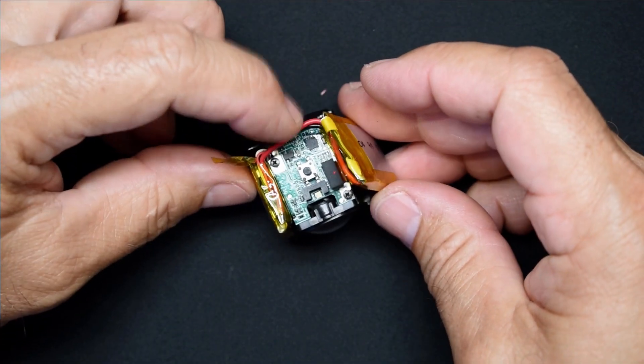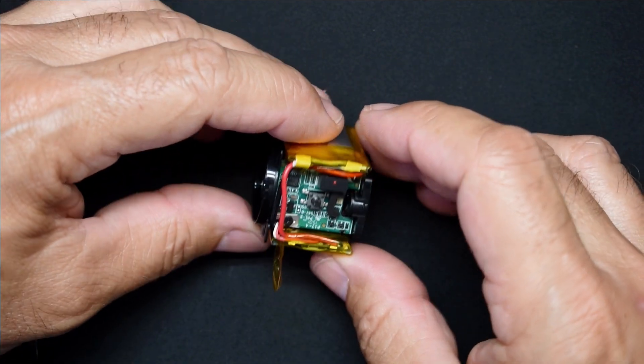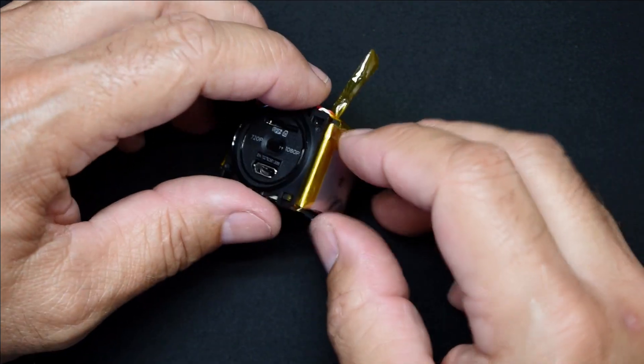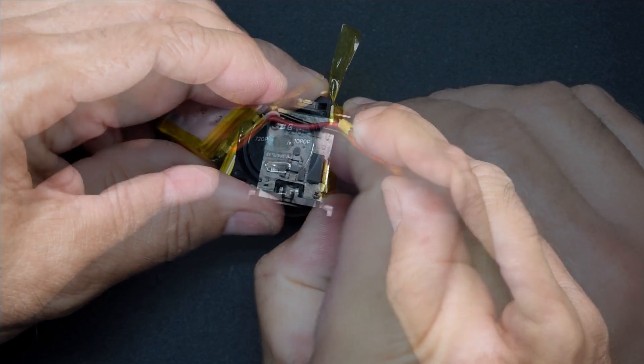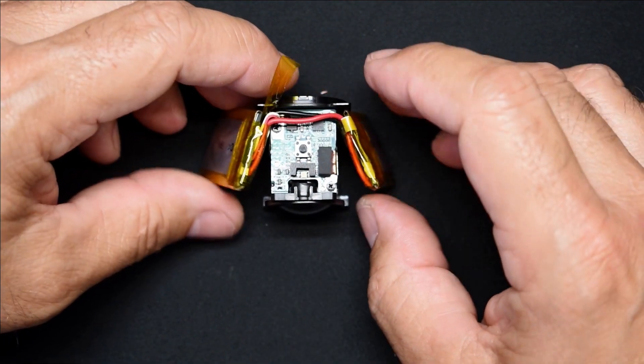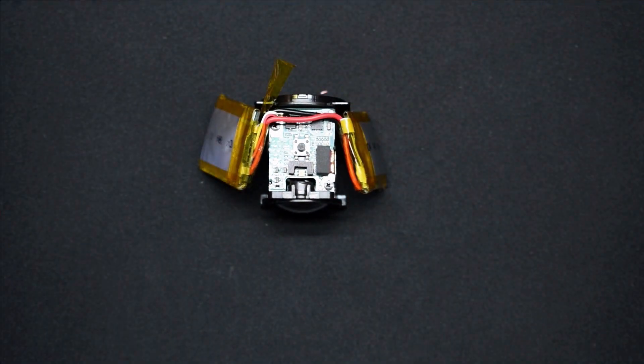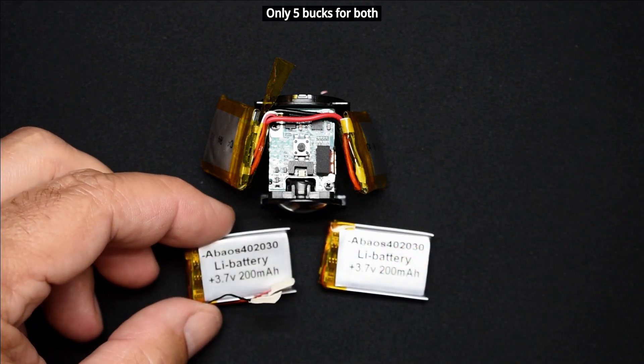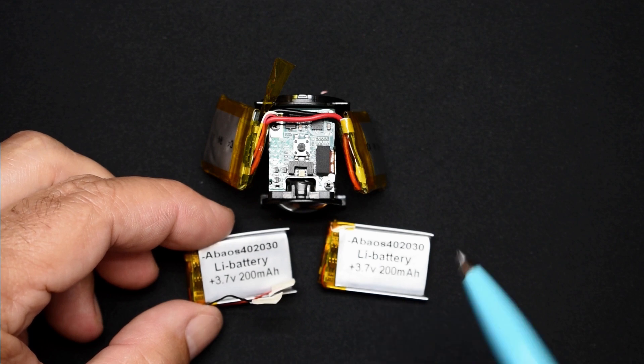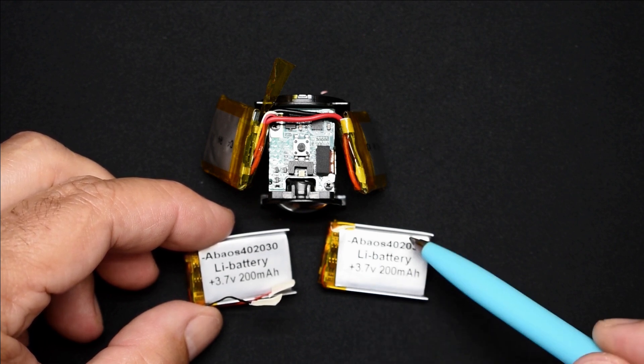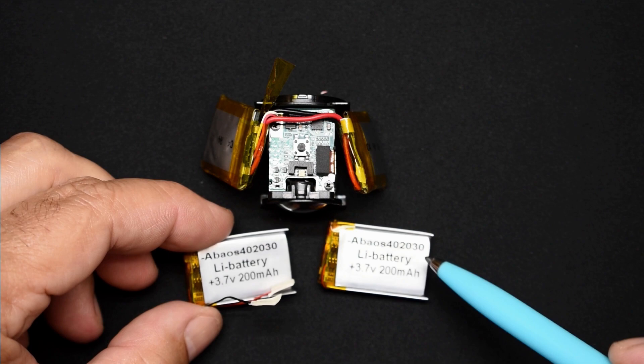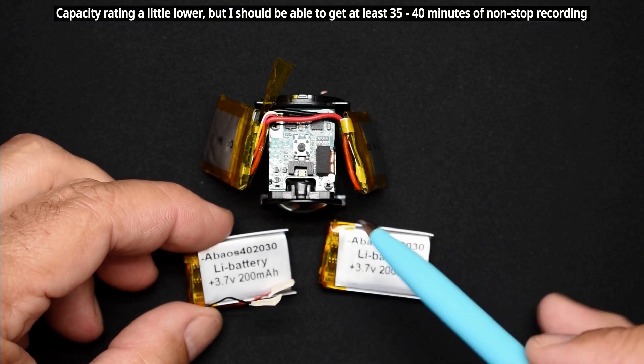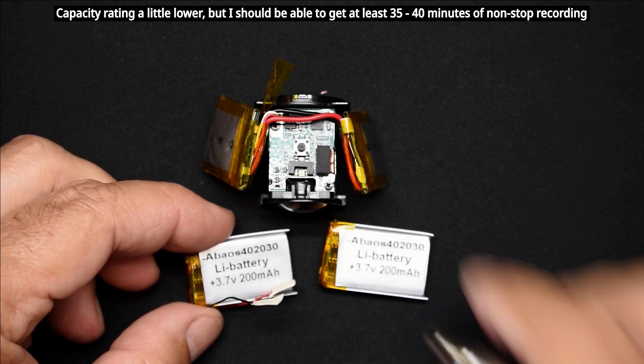The lipo cells I have are these right here. And you can see they're also 4 millimeters in thickness, 20 millimeters in width so they are a little narrower and they're a little longer. So I think I can get them to fit right in there. We're going to find out.